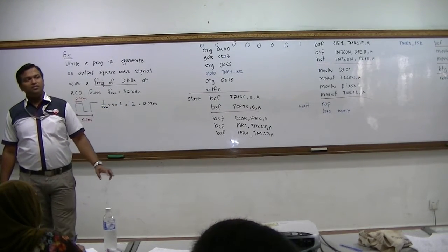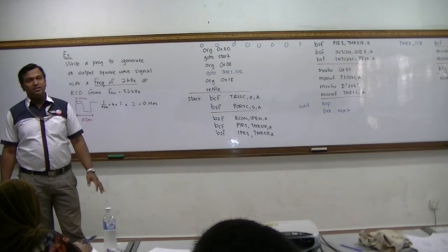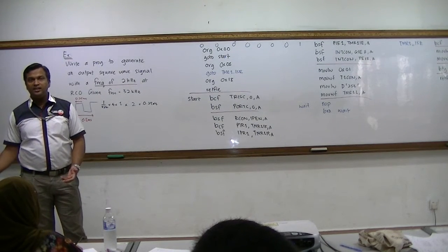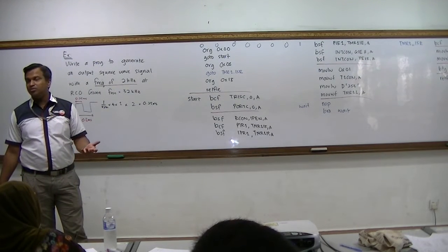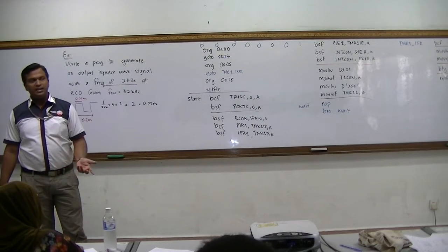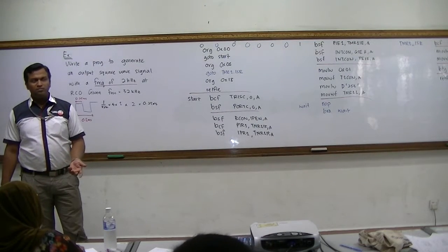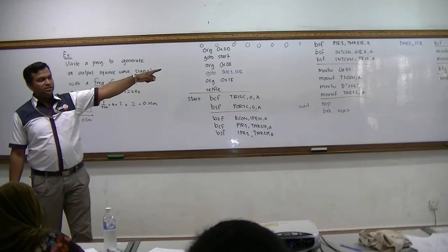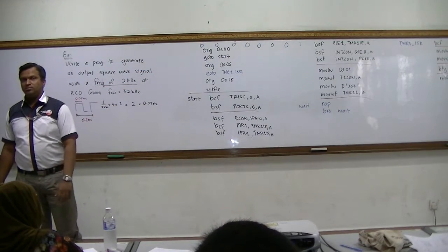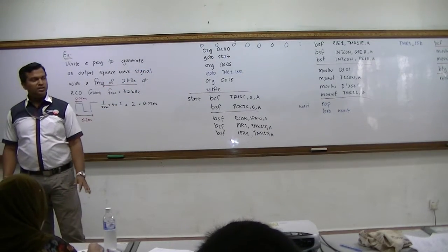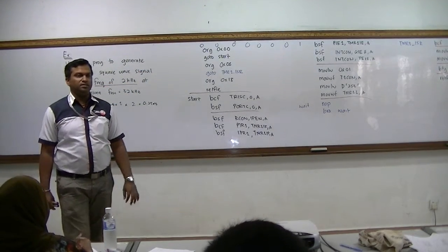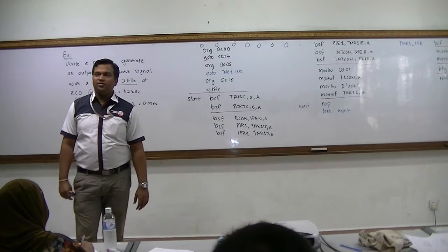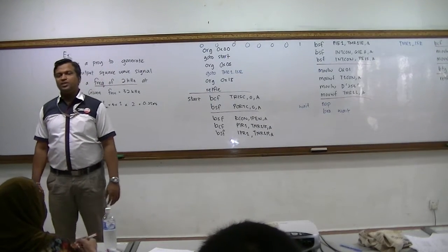If you have INT0 which is high priority and Timer 1 which is also high priority, how are you supposed to select? Same principle — whenever a high interrupt fires, check which flag is on. Same thing. Any other questions?